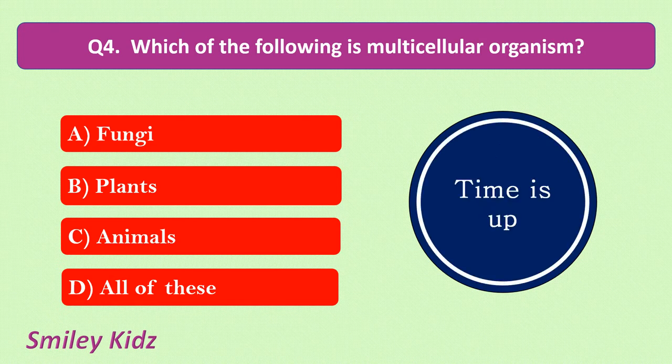Your time is up and the correct answer is all of these. Fungi, plants and animals all are multicellular organisms.